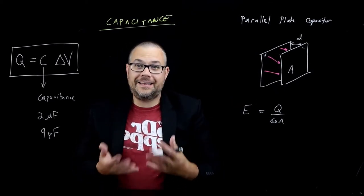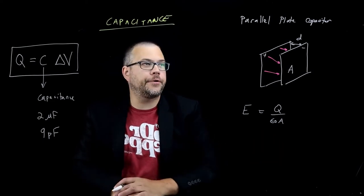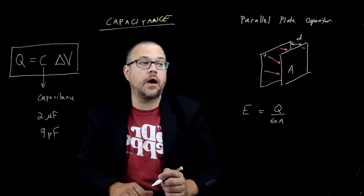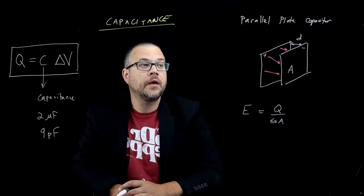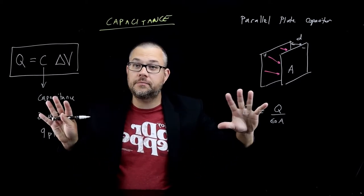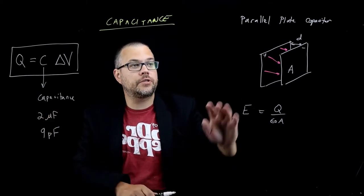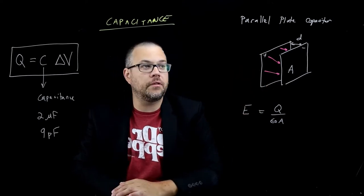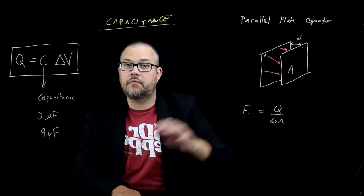And the key thing for an ideal parallel plate capacitor is we want D to be really tiny compared to the size of the plate. So we want the gap between them to be really small and the plates themselves to be really big. That ensures a really constant, uniform electric field in between and zero electric field outside.